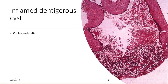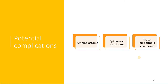Along with these, inflammation can also induce the breakdown of epithelial cells and inflammatory cells, giving rise to numerous cholesterol clefts in the connective tissue. The potential complications include the conversion of the cystic epithelium into ameloblastoma, squamous cell carcinoma, or mucoepidermoid carcinoma.